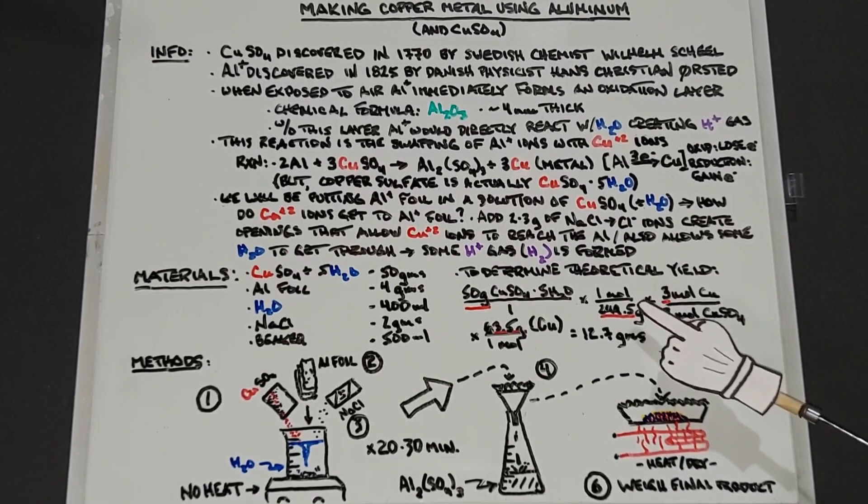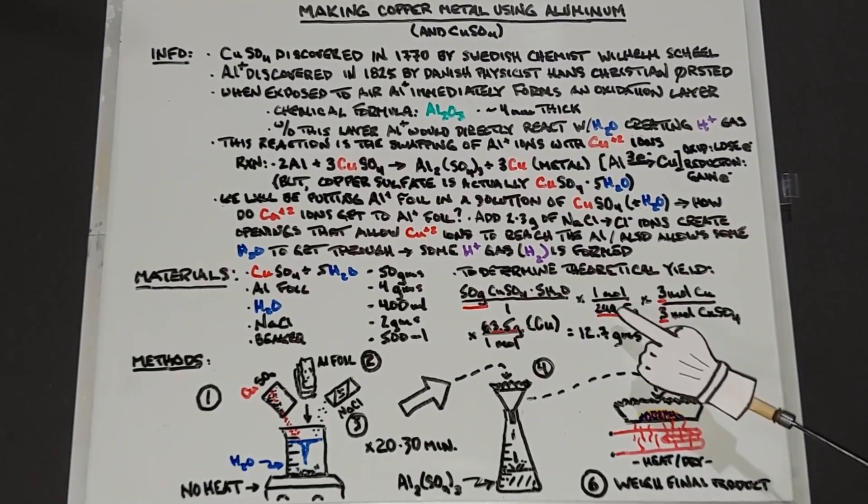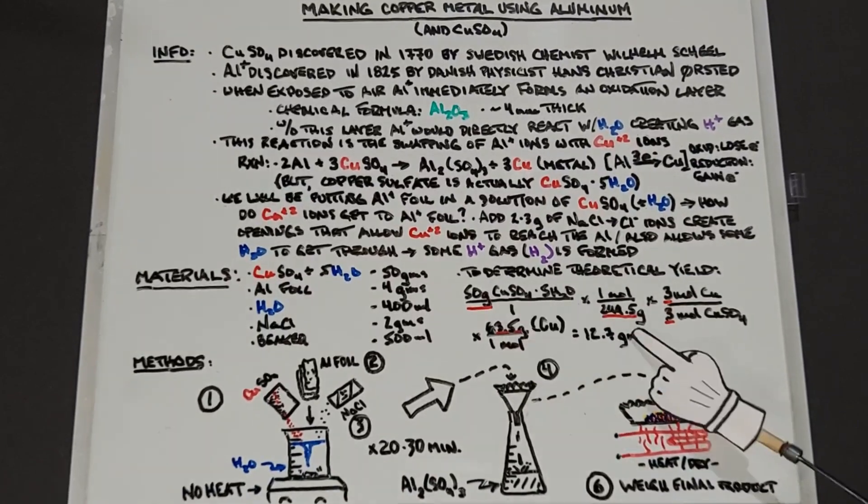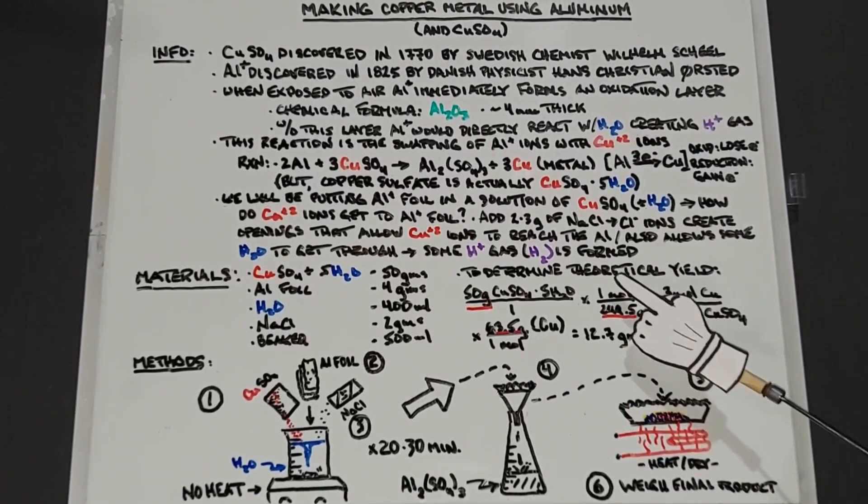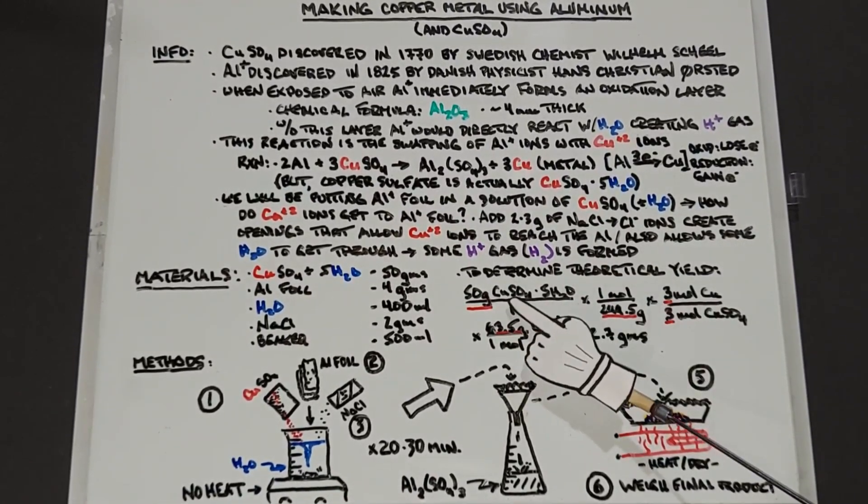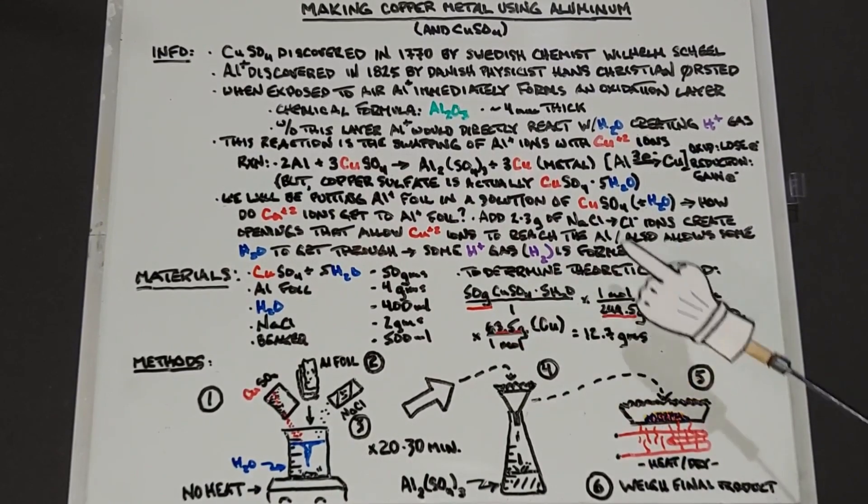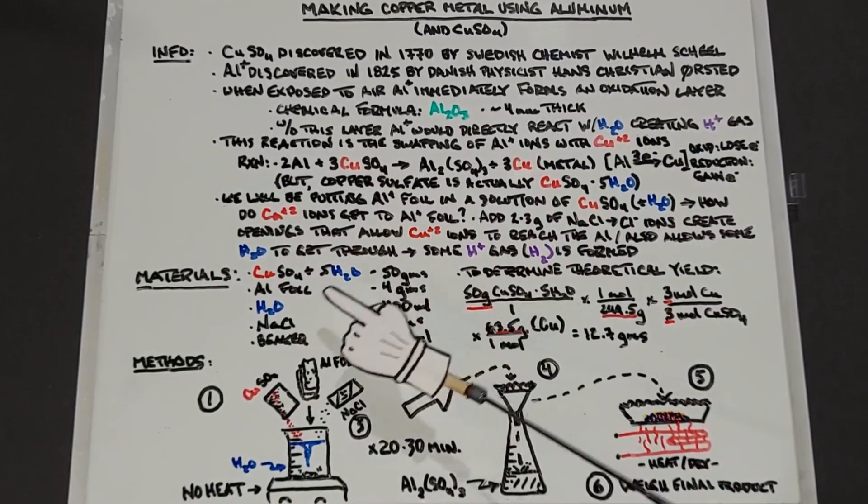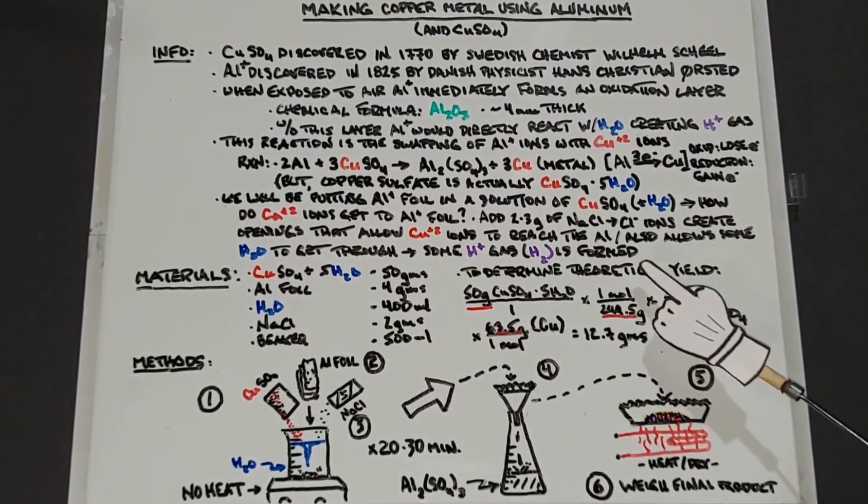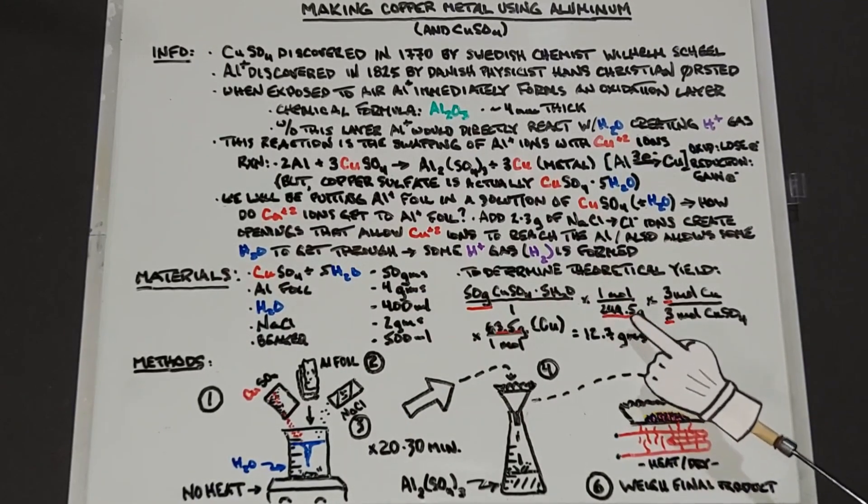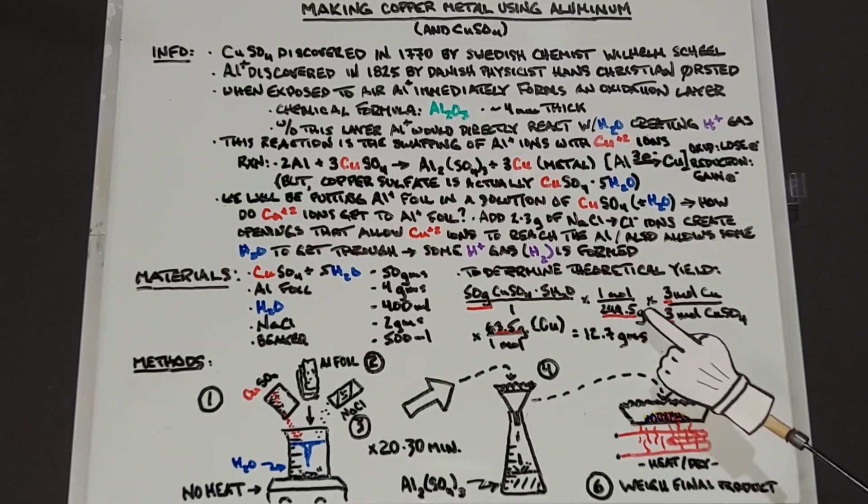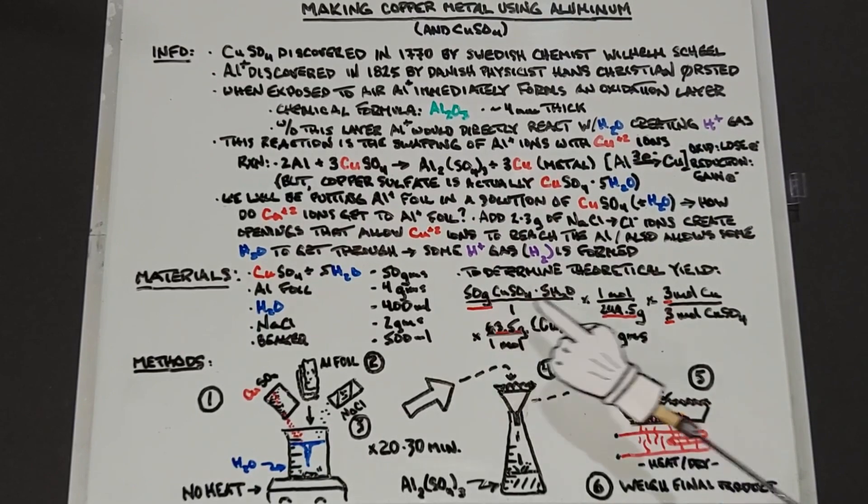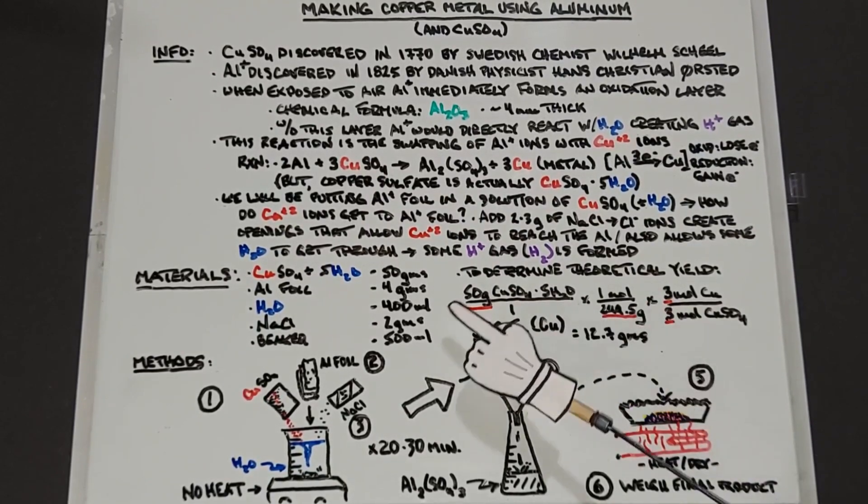This is the weight if we had one mole of copper sulfate pentahydrate. So we multiply the amount we're using, which is the 50 grams, times one mole over 249.5 grams. You want this so that the grams cancel out. That's how you know this is not flipped the other way, because you have grams here, 50 grams, 249.5 grams, so these cancel out.